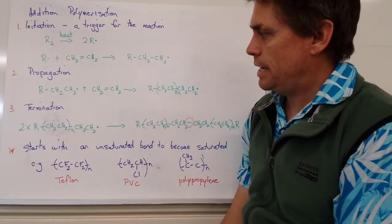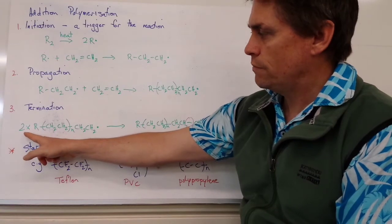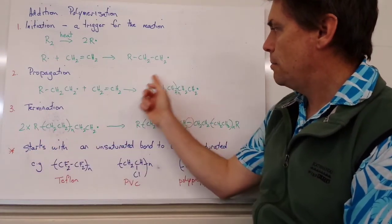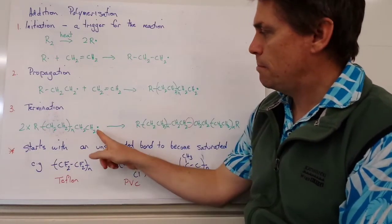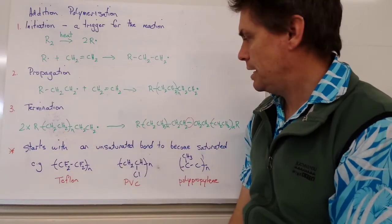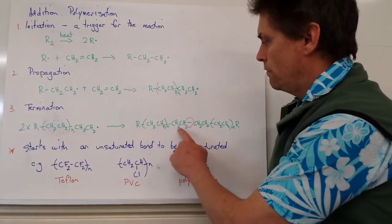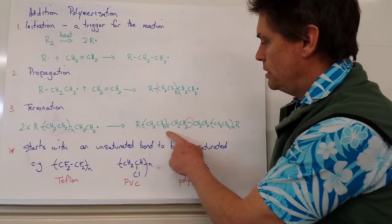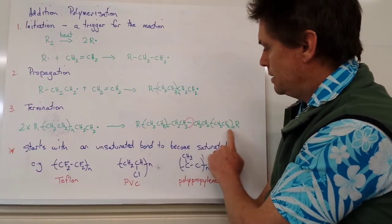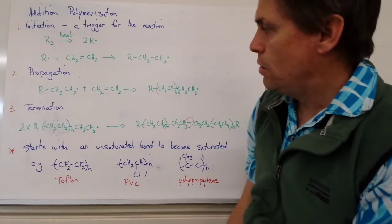And then we move into the last stage, which we call the termination stage for our addition polymerization. And for this stage, we often find that we have two molecules of our lengthened polymer. And they come into the presence of each other. Both of them have the radical end. And that end bonds together. So we form from one of them, from one of our units, we form a bond with another unit. And that completes our polymer.